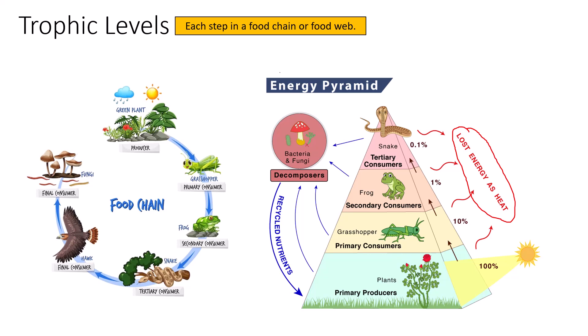Ten percent from the primary producers is transferred to the primary consumer — that's 10%. Ten percent of that 10% is transferred to the secondary consumer, so we're at 1%. That 1% is reflective of how much energy is at the secondary consumer level from that original 100% of solar energy given to the primary producers. Then 10% of that 1% is transferred to the tertiary consumer, bringing us to 0.1%.